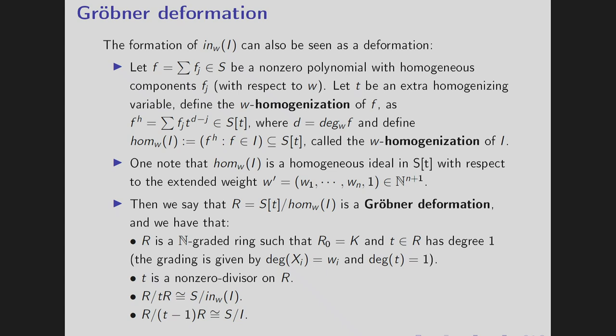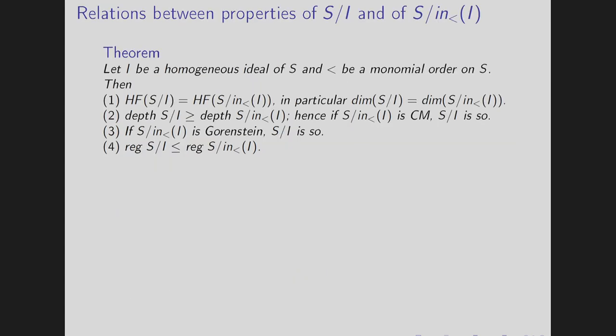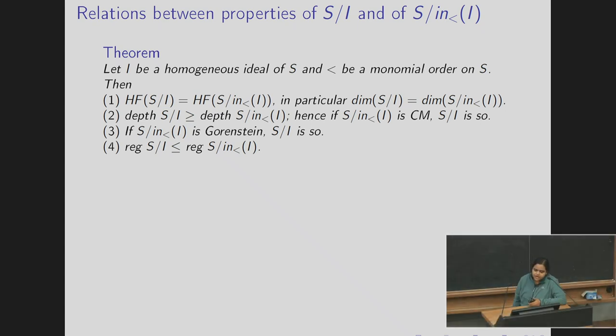So the general question we ask is how to obtain properties from S mod initial ideal to S mod I. So let I be a homogeneous ideal of S and less than be a monomial order on S. Then it is known that the Hilbert functions of S mod I and S mod initial ideal are same. Hence their dimensions are same, the depth of S mod I is greater equal to depth of S mod initial ideal. Hence if S mod initial ideal is Cohen-Macaulay then S mod I is so.